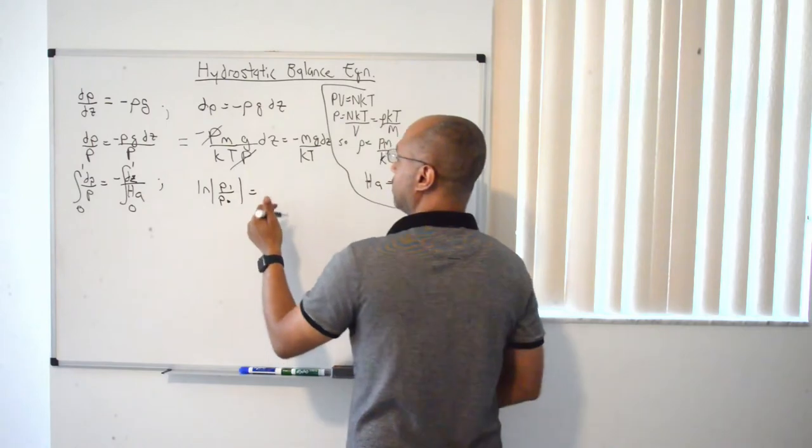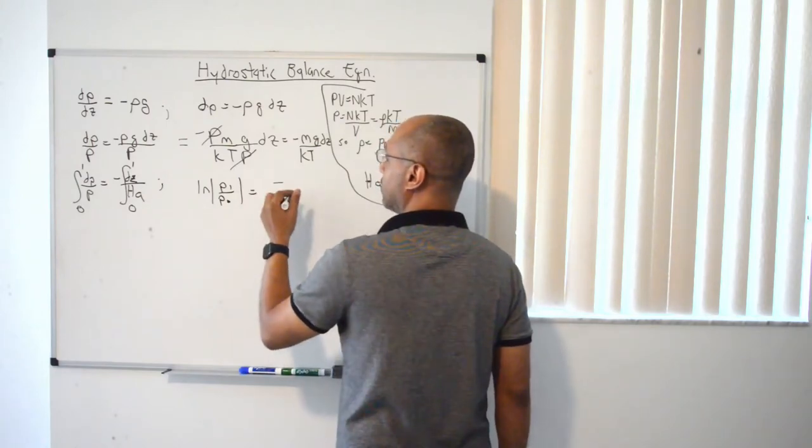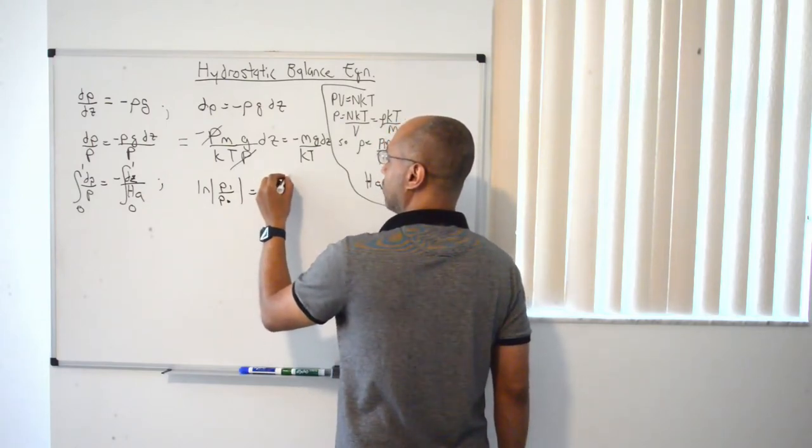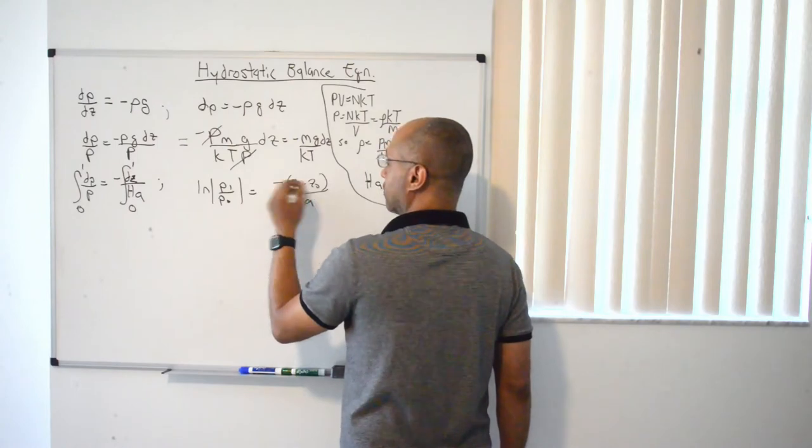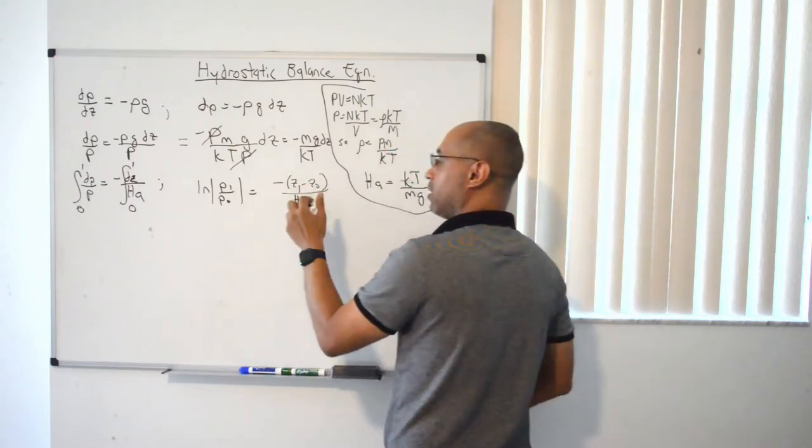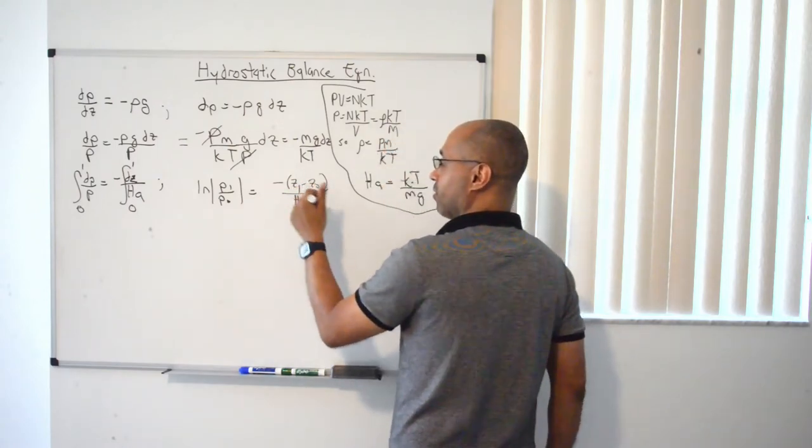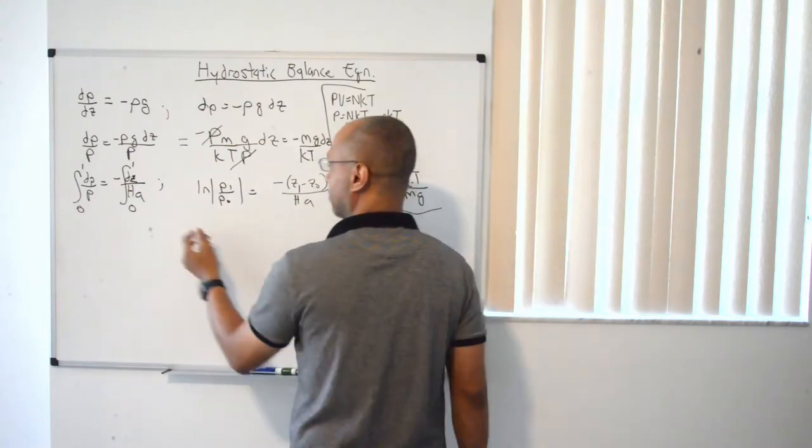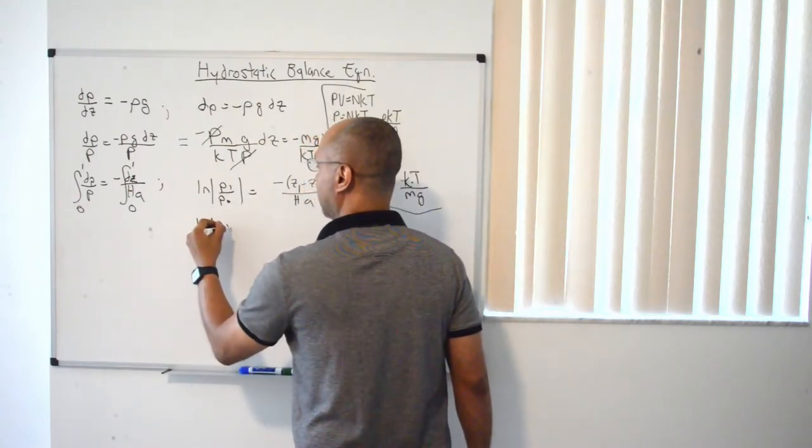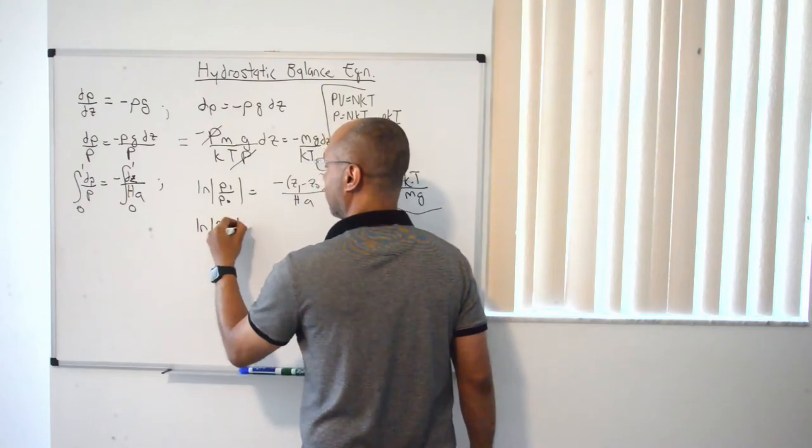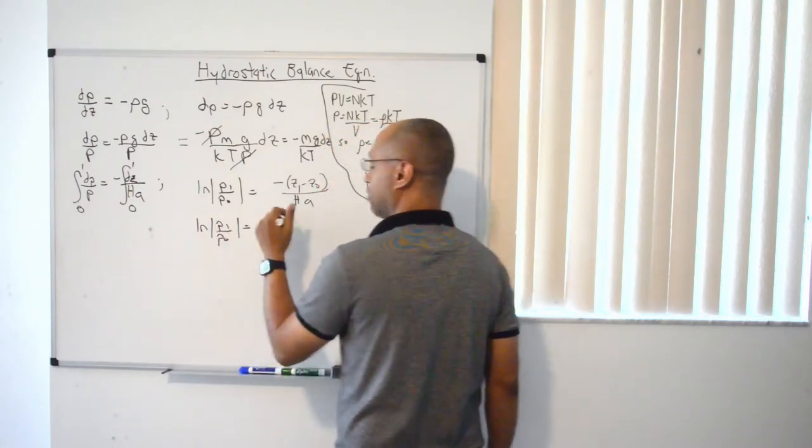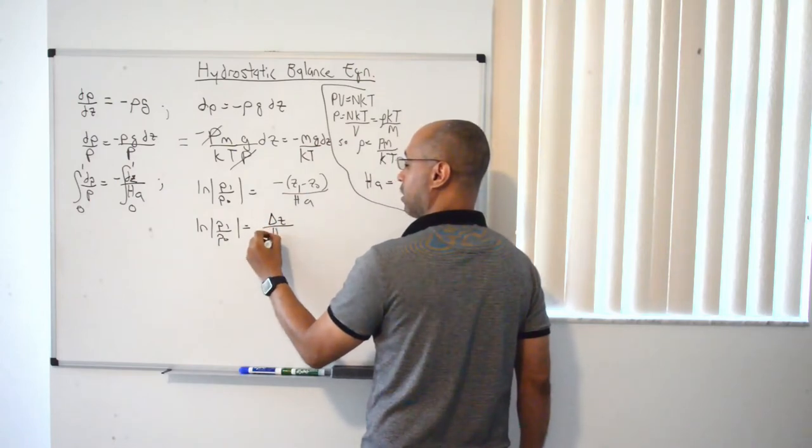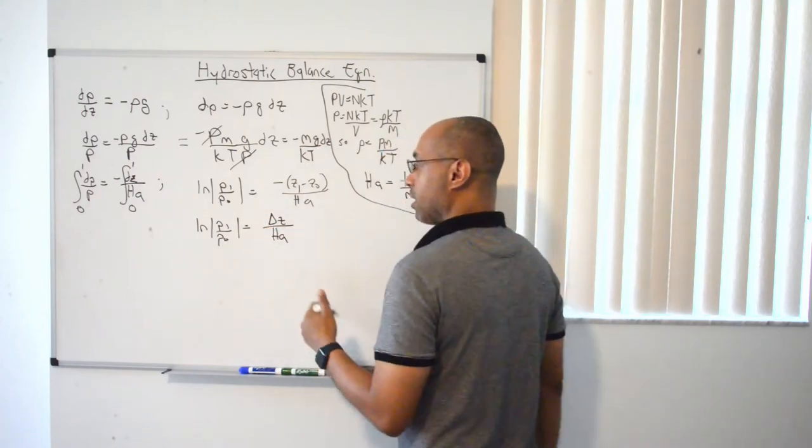This is equal to negative z1 minus z0. And then you get basically z0 minus z1. And so what you can really do is just simplify this into just calling this Δz, right? That's just the z1 minus z0 term.